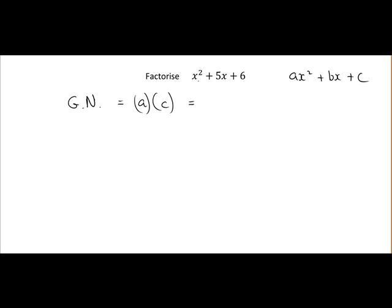It's x squared on its own, that means it's 1x squared. So a is 1 and c is 6. 1 by 6 will give us the guide number of 6.